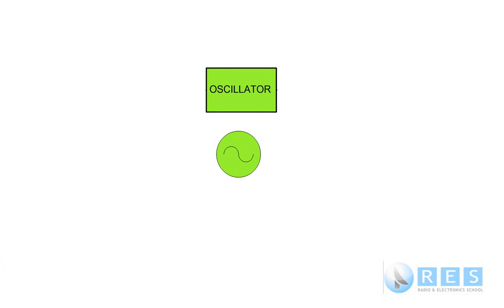To make radio transmission possible we need to generate a radio frequency signal. To do that we use a device called an oscillator.